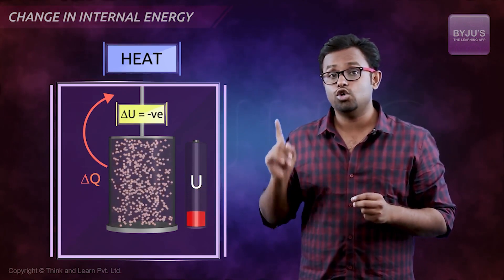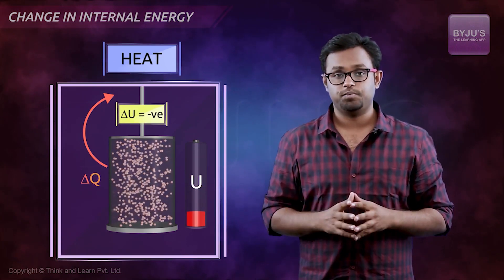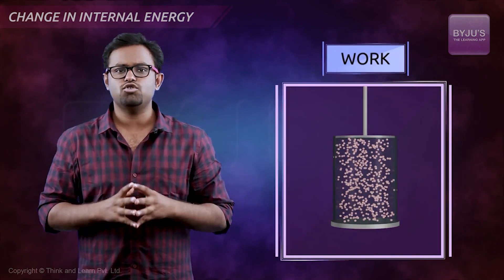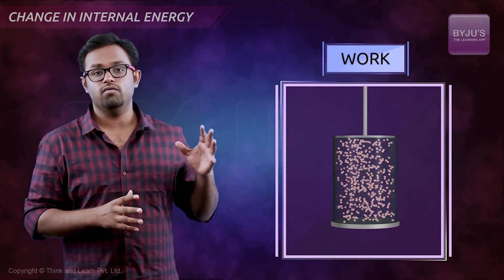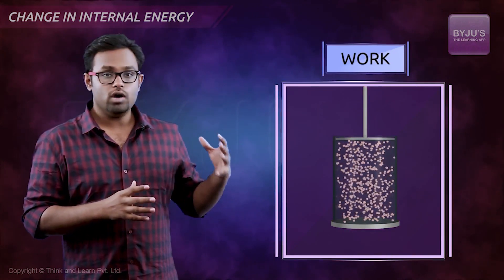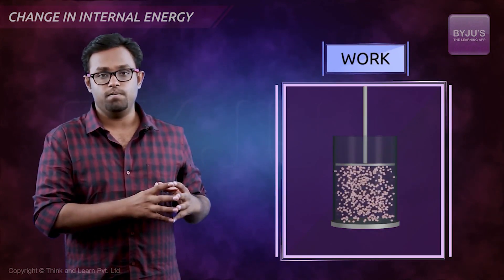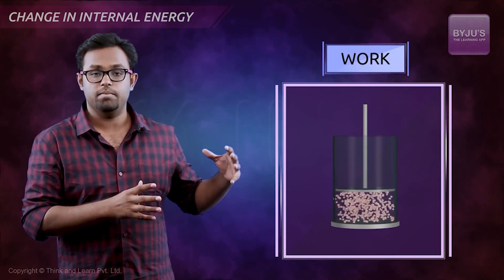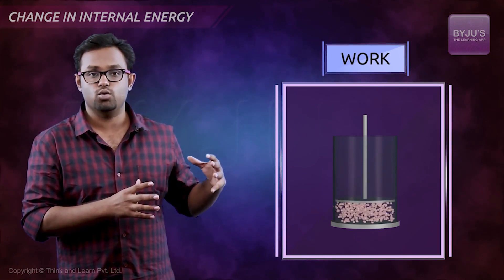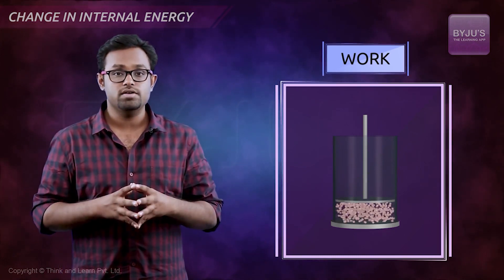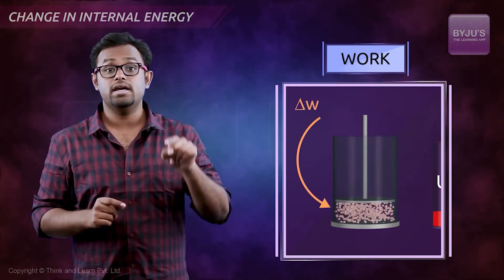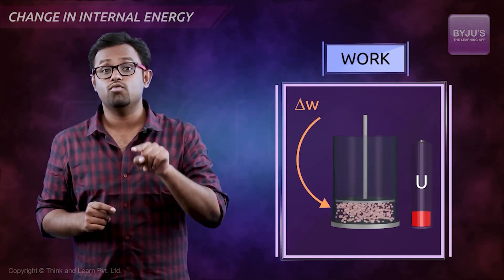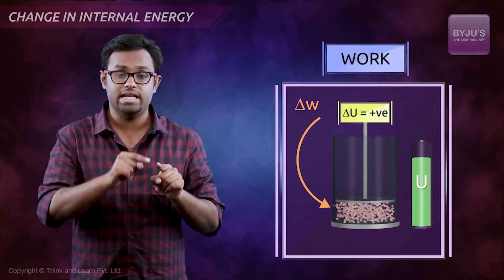We use the letter Q to represent heat. Now let's talk about work. You can also increase the internal energy of the system by doing work on it — if you compress the system by bringing the piston closer and closer. Because you are doing work on the system, the internal energy of the system would increase; the system would gain energy.